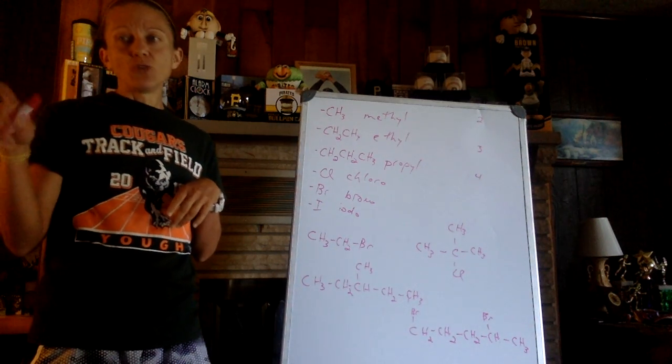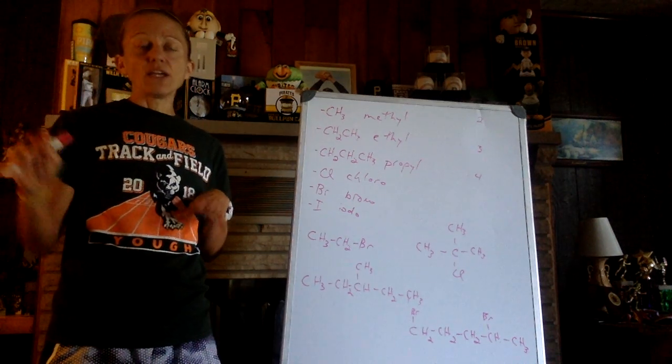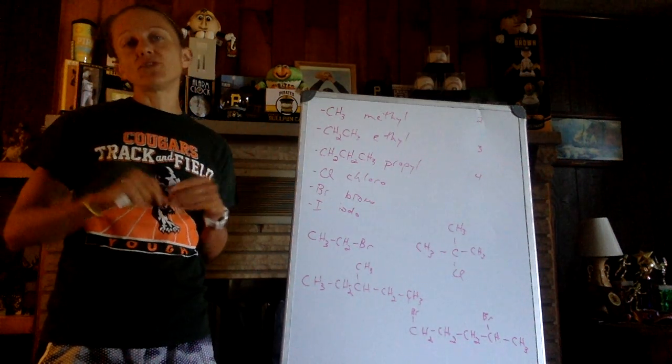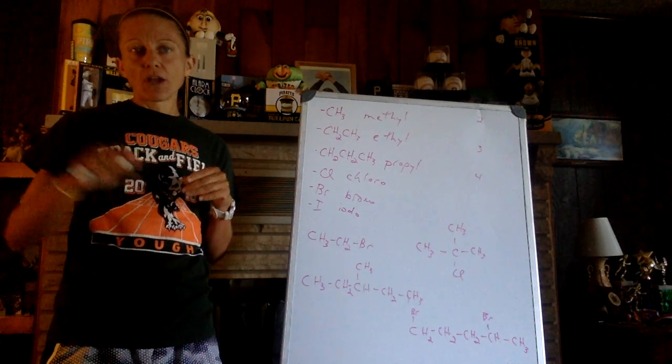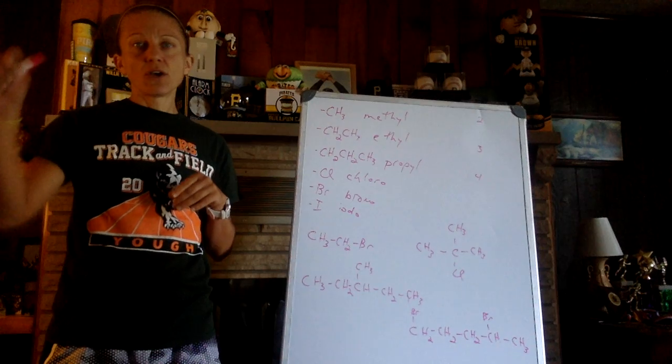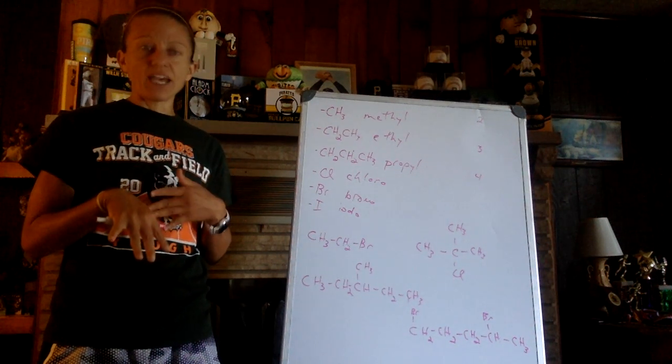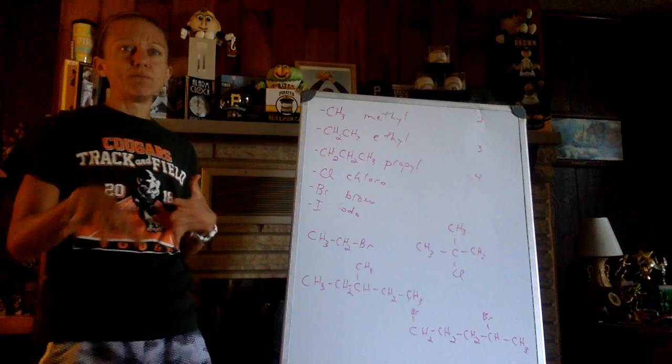For this one, you'll notice I call it one where the chlorine is. It's okay. You can number from either end of the chain to get your lowest number. So that's a chlorine on my first carbon, 1-chloropropane. There are a lot of tricky rules, and again, we're not taking a test on this. I think you'll see a mini quiz on it.